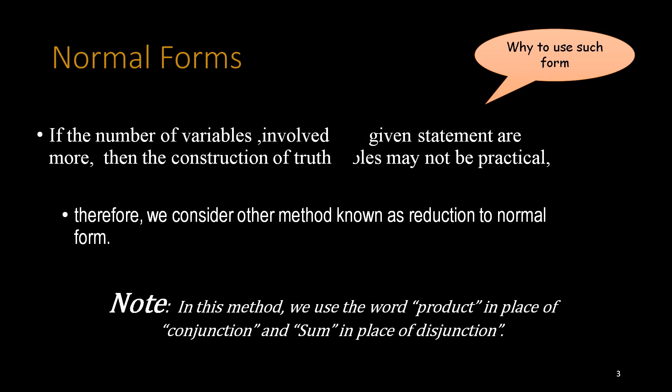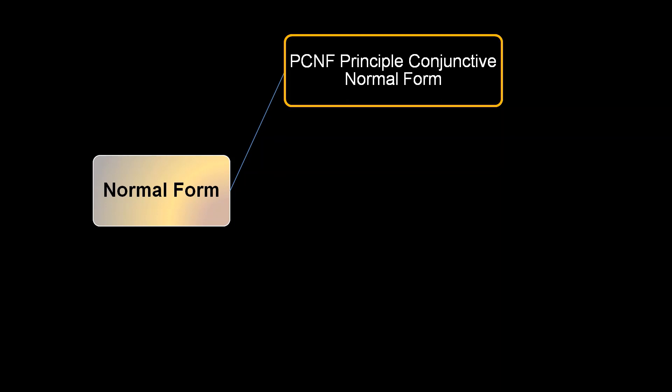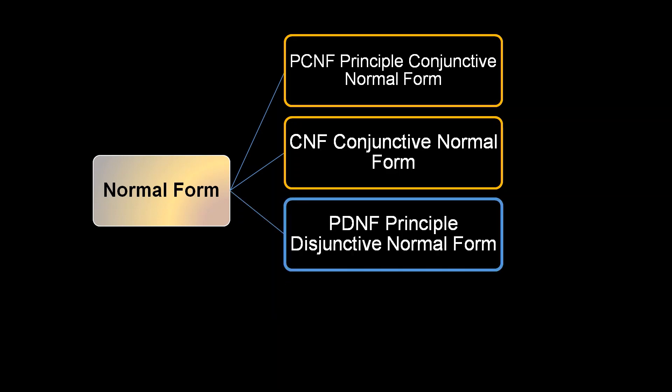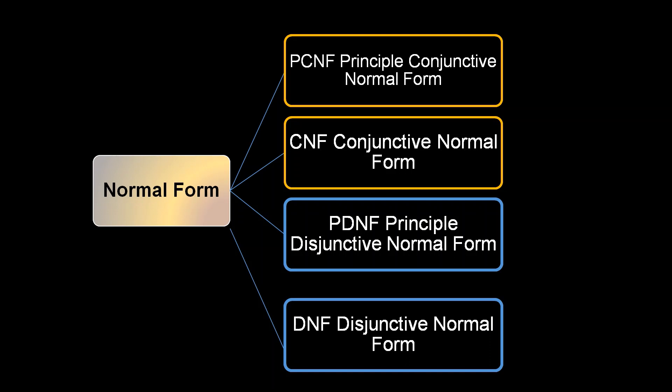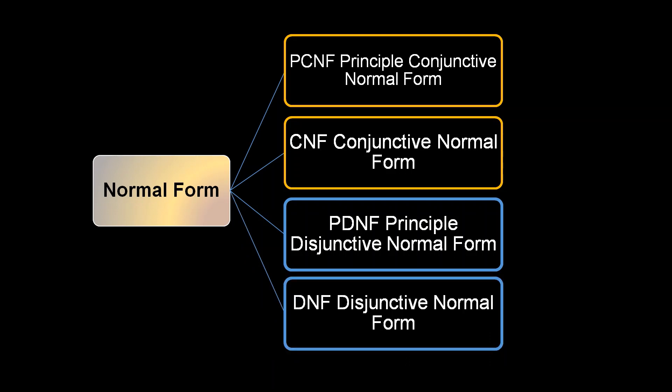Here we have read in the last video, so normal form: First, PCNF - Principal Conjunctive Normal Form. Then CNF - Conjunctive Normal Form. Conjunctive means AND. Then PDNF - Principal Disjunctive Normal Form. Then DNF - Disjunctive Normal Form.